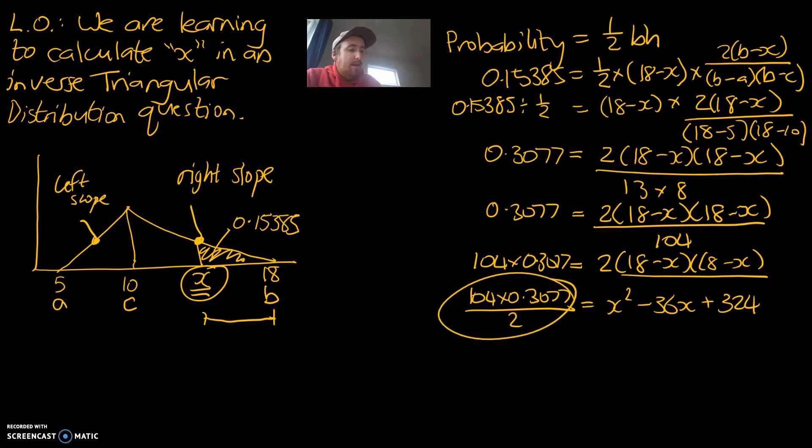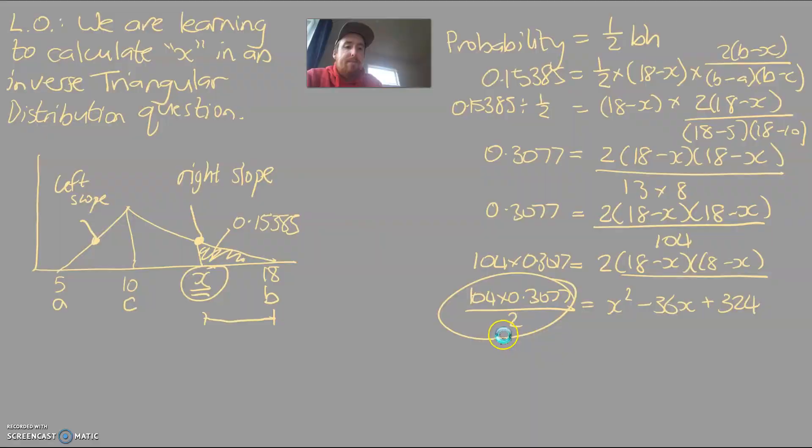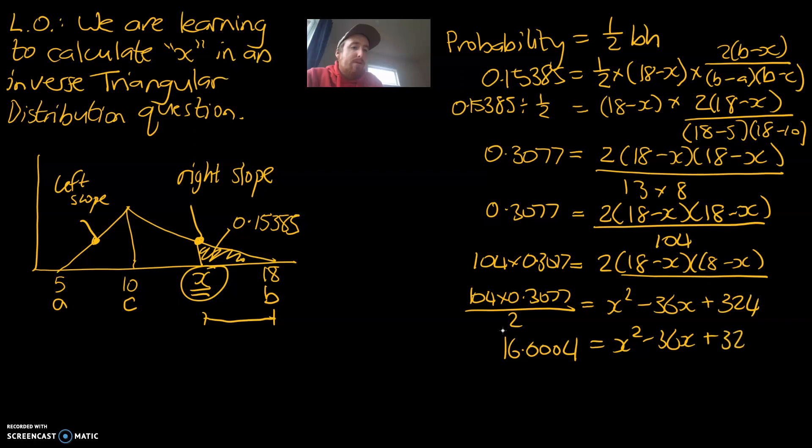All of this comes to 16.0004. Sorry about that. My screen froze a little bit. That comes to 16.0004, and that is equal to x squared minus 36x plus 324. And that leaves our final quadratic as x squared minus 36x plus 324.